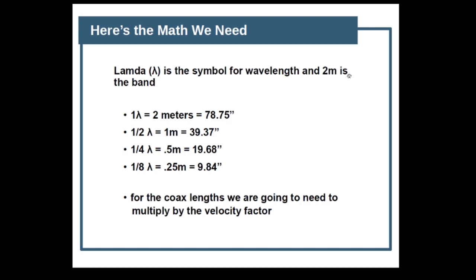Here's the math: we need to know lambda, the symbol for wavelength. Two meters is the band we're targeting. One wavelength is two meters (78.75 inches), one half wavelength is one meter (39.37 inches), a quarter wavelength is 0.5 meters (19.68 inches), and one eighth wavelength for the antenna parts is 0.25 meters (9.84 inches). For the coax lengths of the cross-coupling coaxes, we need to multiply by the velocity factor.